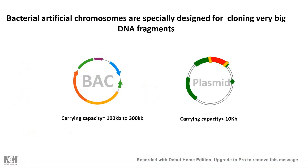In this video I will be talking about bacterial artificial chromosomes. Bacterial artificial chromosomes, in contrast to plasmids, have a bigger carrying capacity. The carrying capacity — that means the size of the fragment or gene of interest it can carry — is around 100 kb to 300 kb, which is huge because plasmids' carrying capacity is less than 10 kb. If anything more than 10 kb is cloned in a plasmid, the plasmid would not propagate properly. So bacterial artificial chromosomes are specially designed for cloning very big DNA fragments, like an entire genome of a virus.